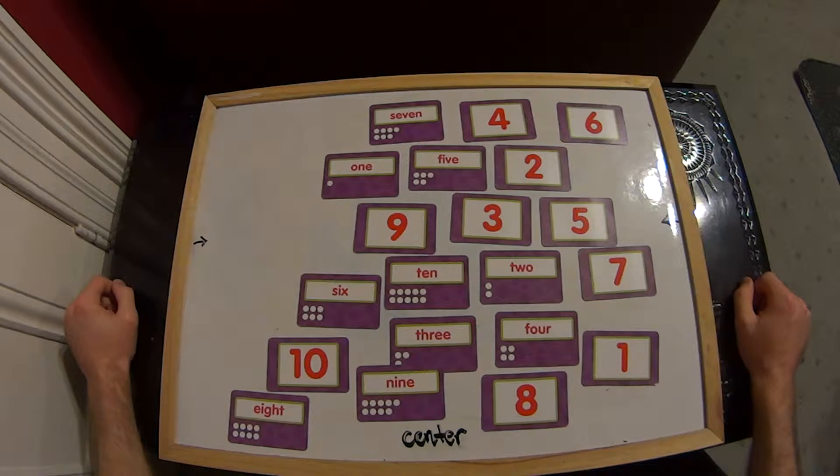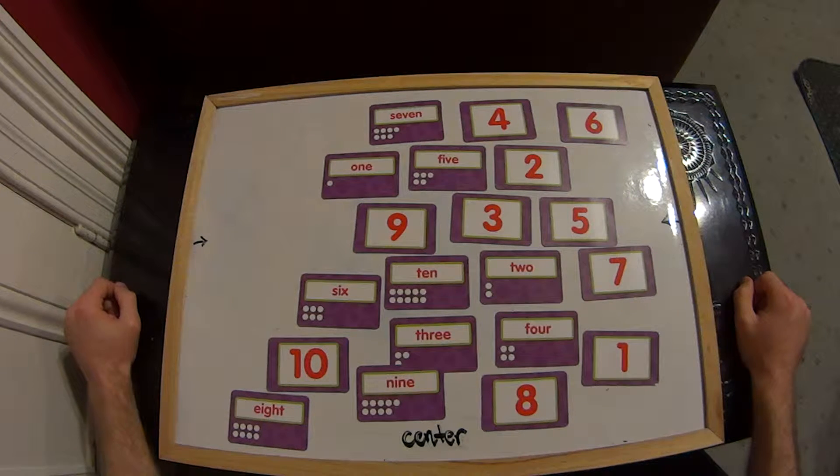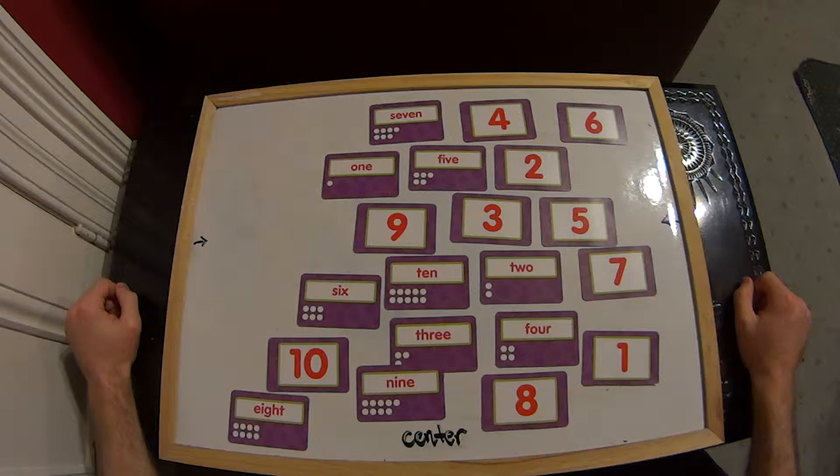In this video, we're going to look at some of the different ways you can represent numbers. So we're going to start off by matching the number symbols with the number names, from 1 to 10.